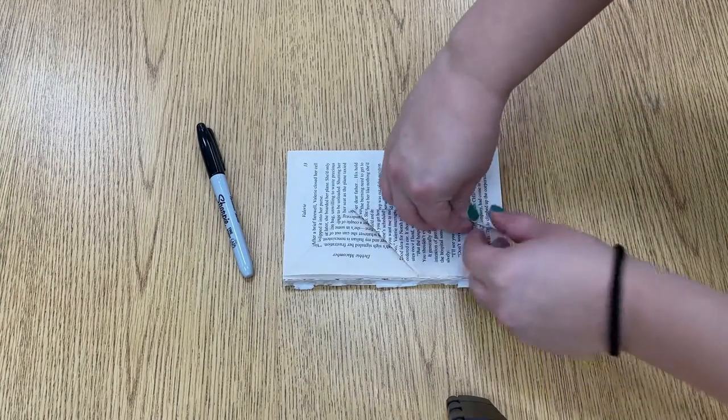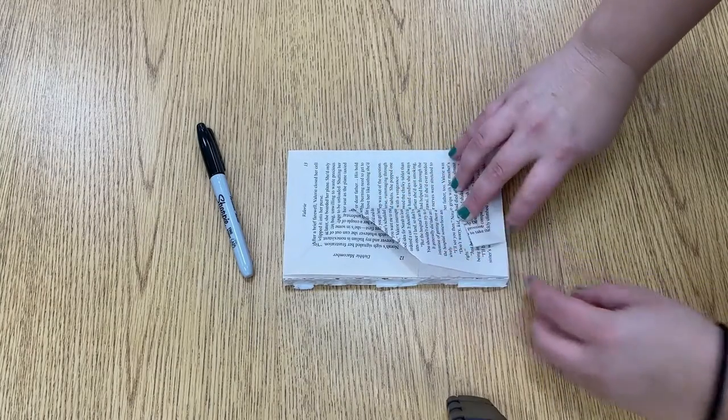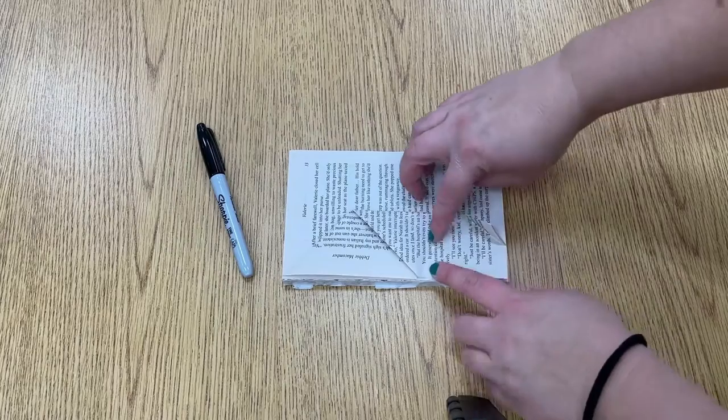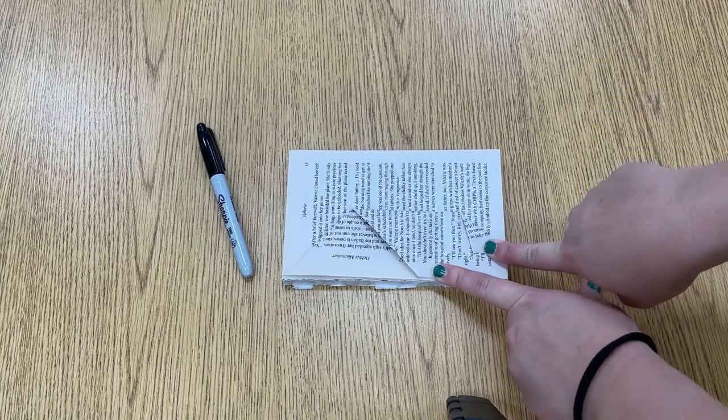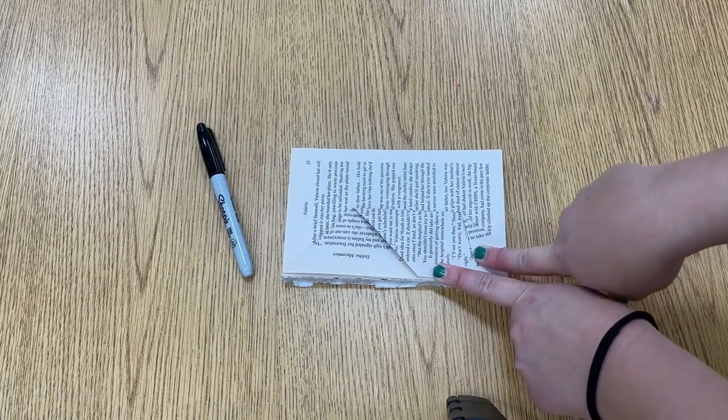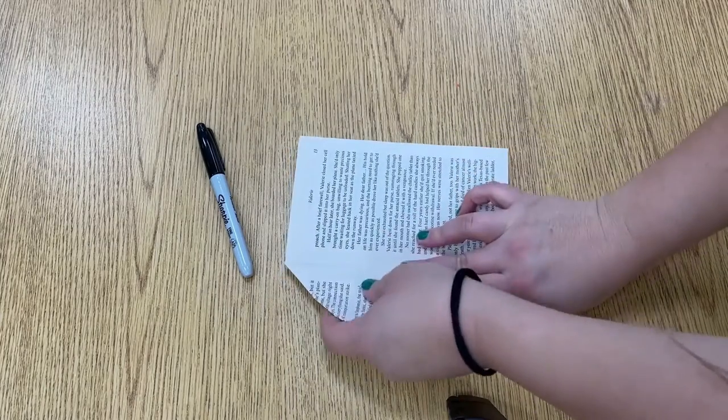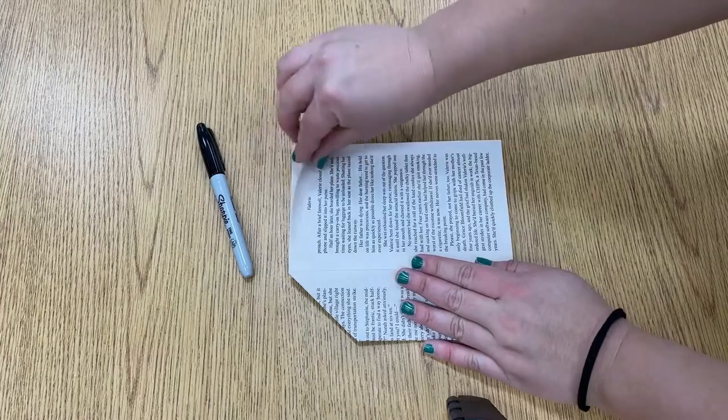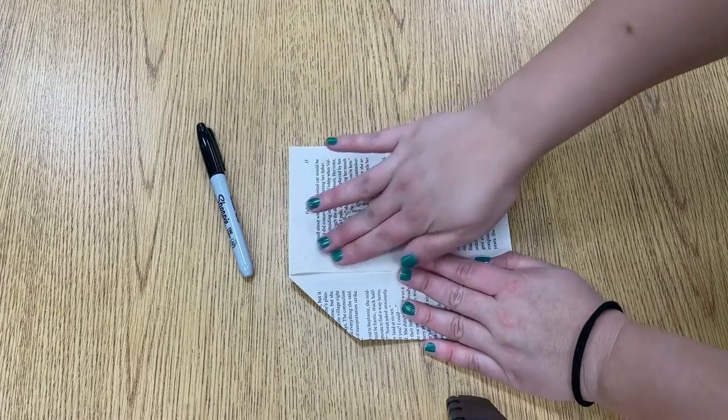And then for his little butt, we do a little crease, just like this. So you do every single page, just like a paper airplane, with a little notch out of the butt. And fold it down, and do it all over again.